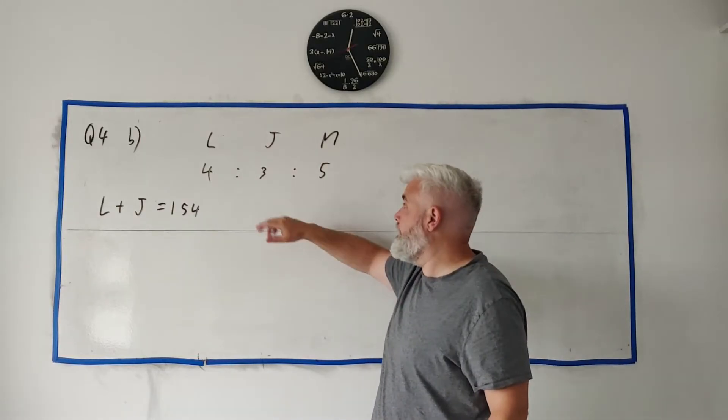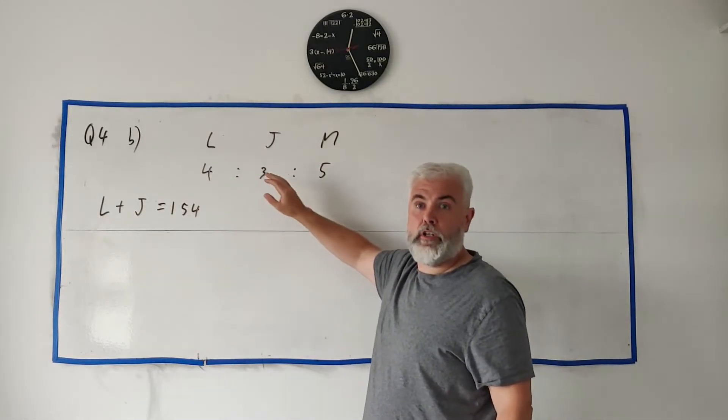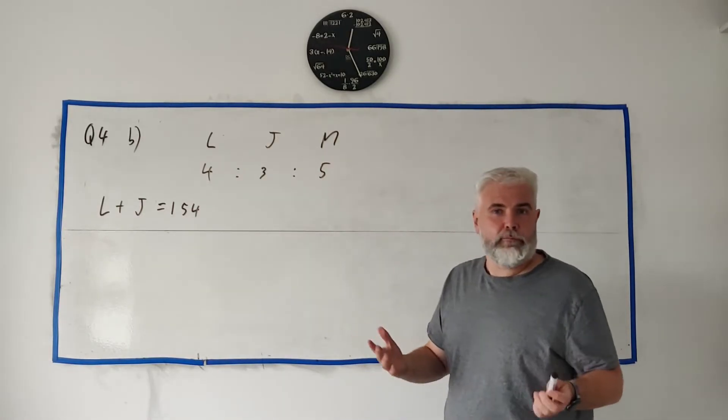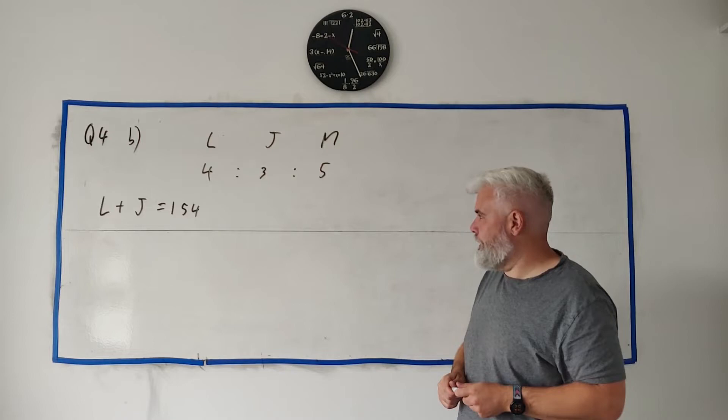If this bill was 12, Liam would pay 4, John would pay 3, and Marta pay 5, but it's not 12, it's not going to be as simple as that.